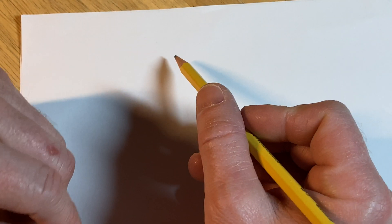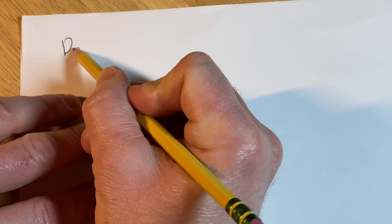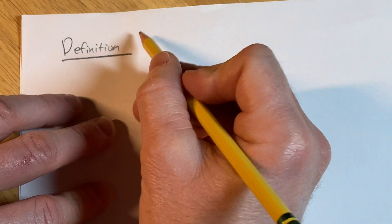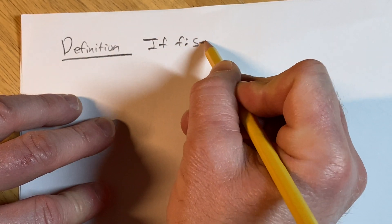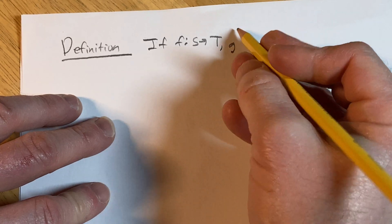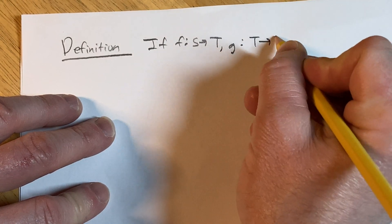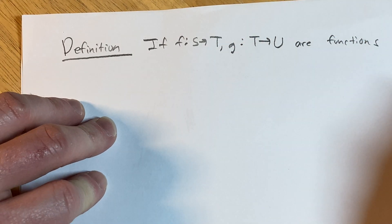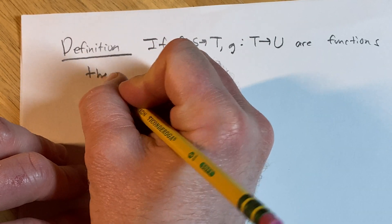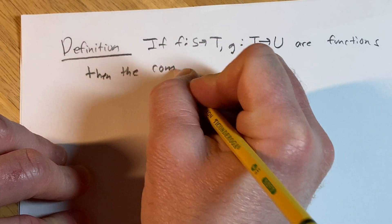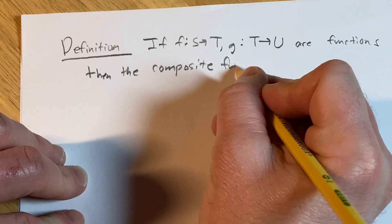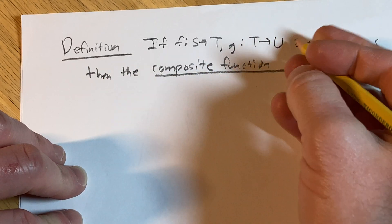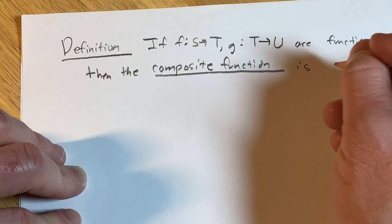In this video we're going to define the composite function. If f from S to T and g from T to U are functions, then the composite function is the following function.